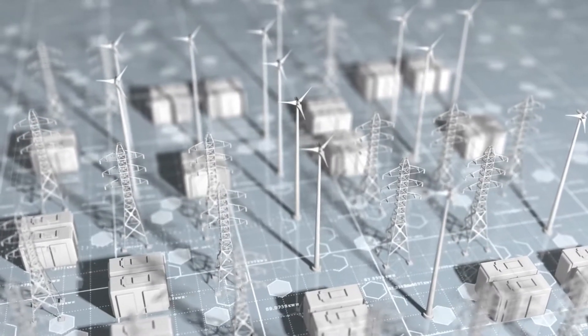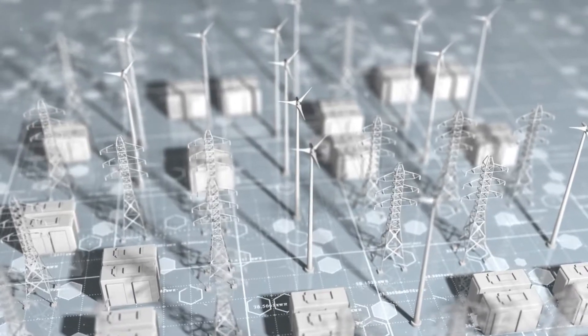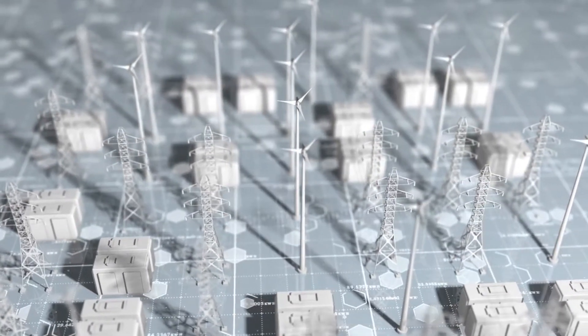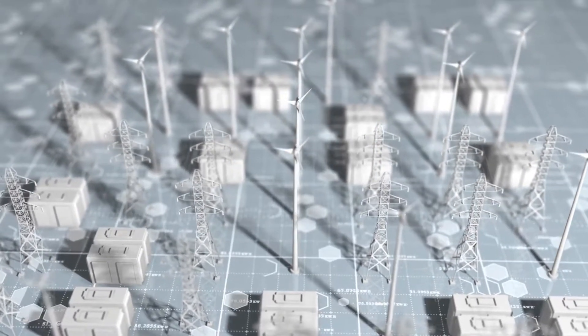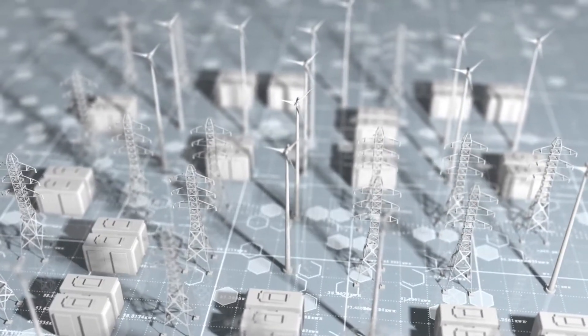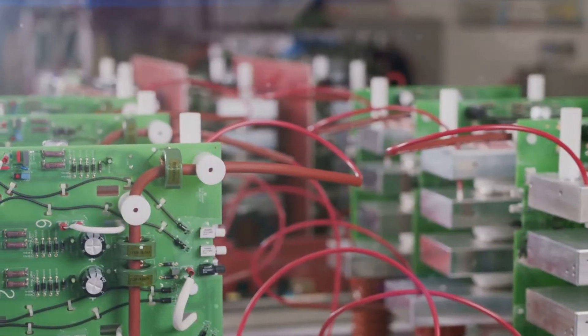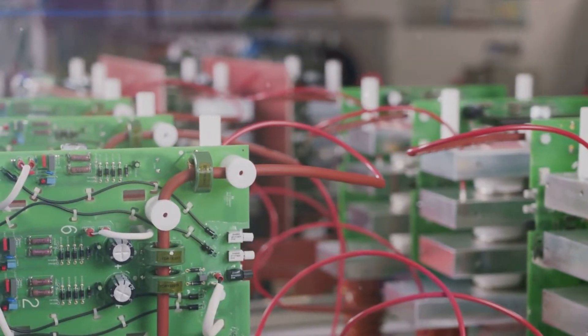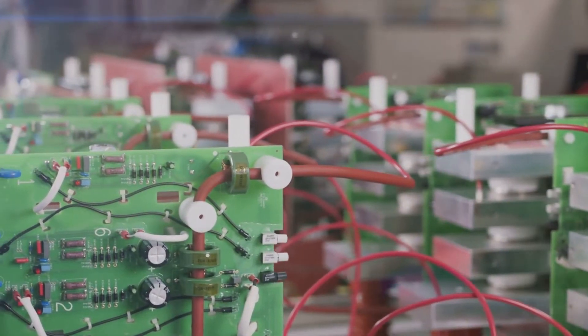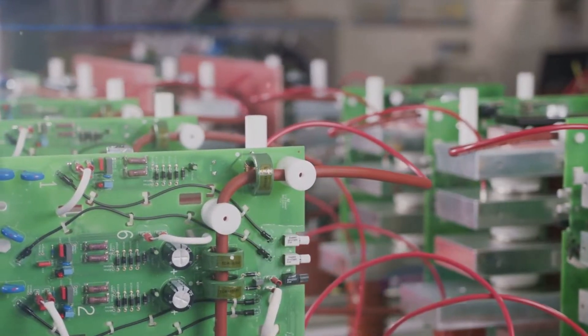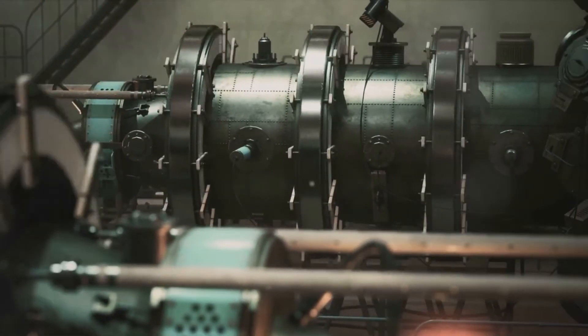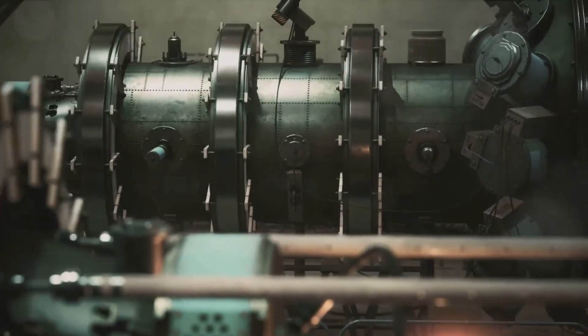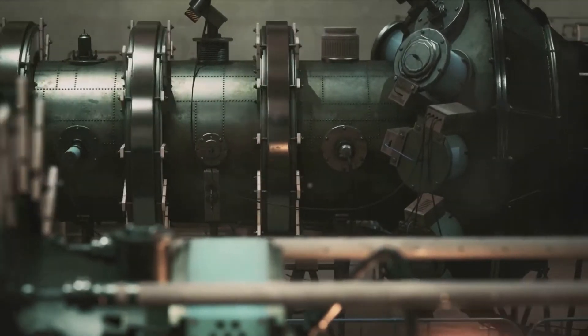Let's start with capacitor banks. These are clusters of capacitors connected together in a power system. Capacitors are devices that can store and release electrical energy rapidly. In power systems, they are used to provide reactive power. When the power factor dips, capacitor banks inject reactive power into the system to balance the equation. This helps maintain voltage stability and enhances the overall system efficiency.